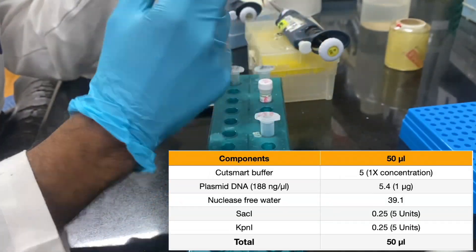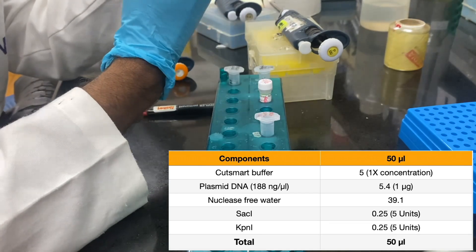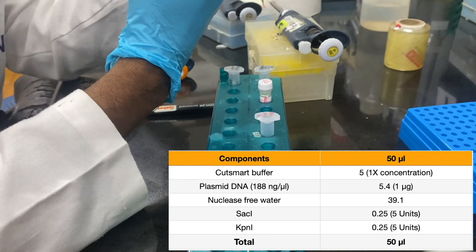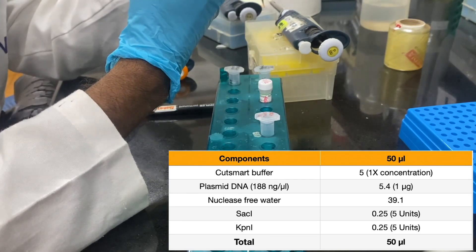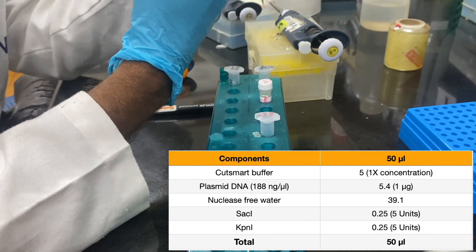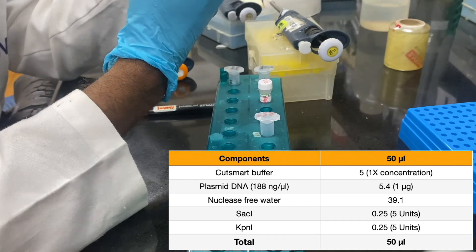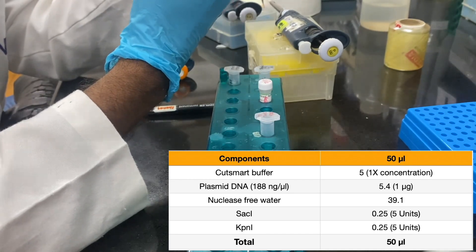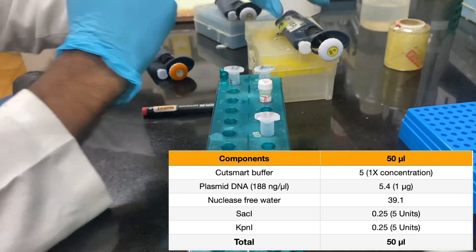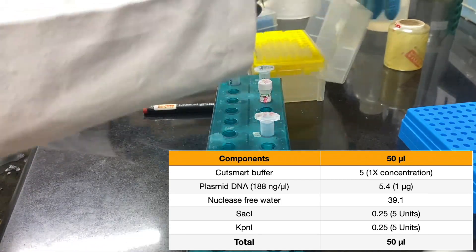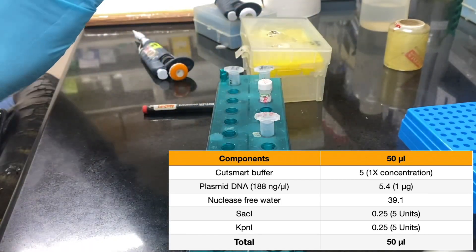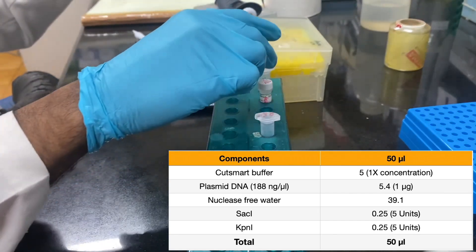We will start setting up the reaction. Today we are going to set up a 50 microliter reaction in which we are digesting one microgram of our recombinant plasmid DNA by using five units of KPN1 and Sac1 restriction endonucleases. First we will add the nuclease-free water. Calculations you can see on my screen.